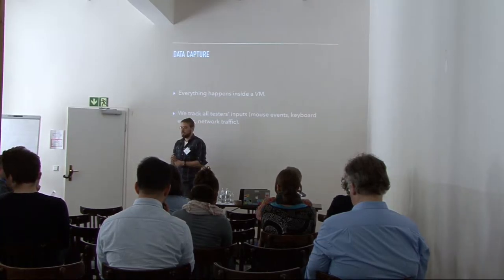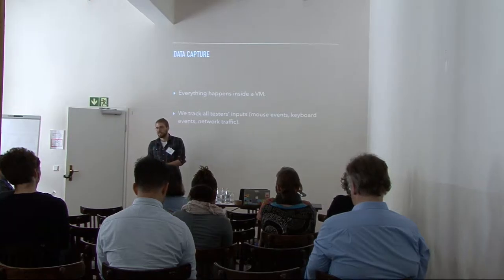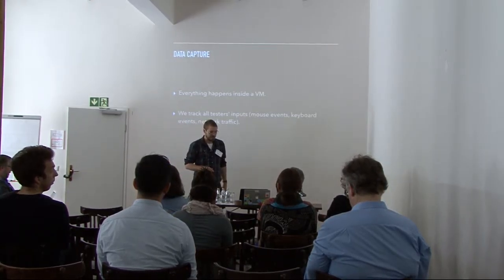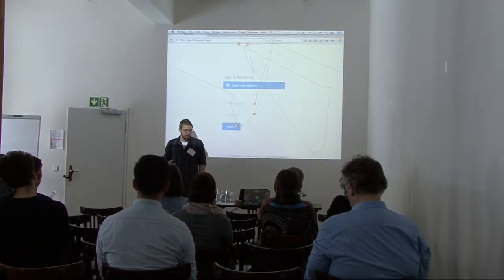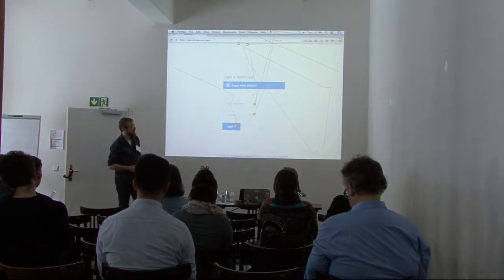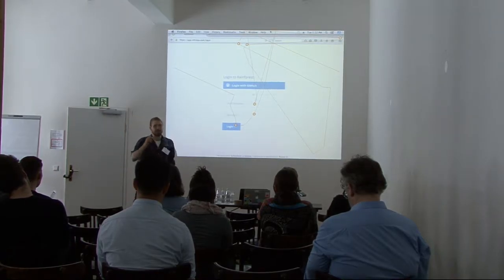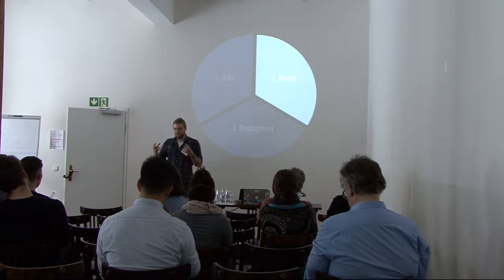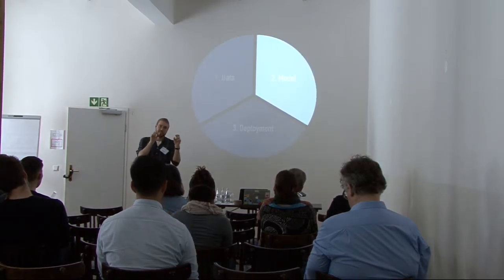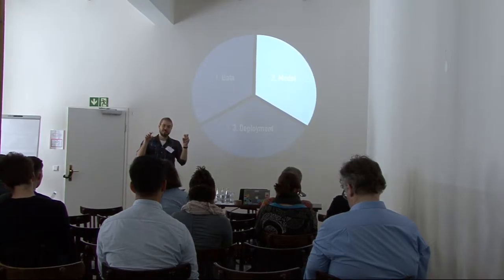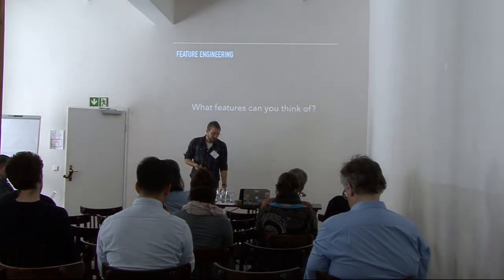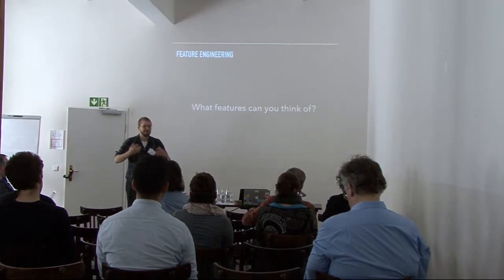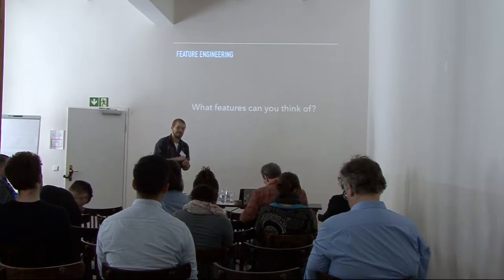The way we capture data is using a virtual machine. The terminal you've seen is a virtual machine and everything that happens there is recorded — the mouse moves, keyboard inputs, and network requests between the browsers. We also capture screenshots. So if a tester sees a login page and they click on username and password and paste things in, we capture that and we know what they do. Our data is basically a collection of feature vectors describing the work that people did, labeled as either good work or lazy work that we should not take into account.